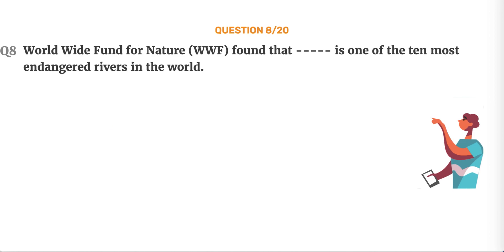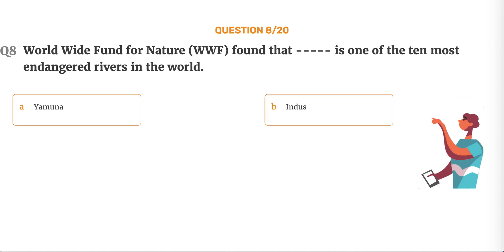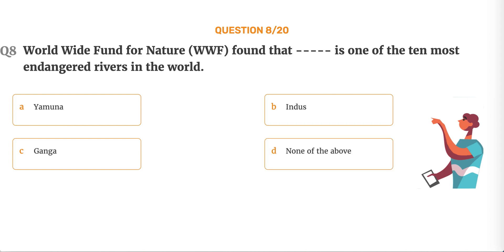Question number 8. Worldwide Fund for Nature, WWF, found that dash is one of the 10 most endangered rivers in the world. Option A, Yamuna. Option B, Indus. Option C, Ganga. Option D, None of the above.